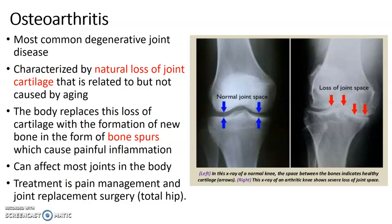Osteoarthritis is the most common degenerative joint disease, characterized by a natural loss of joint cartilage. It is related to, but not caused by, aging. You can often see bone spurs that form and cause painful inflammation. It can affect most joints in the body, and treatment is pain management or joint replacement surgery — usually total hip or total knee.